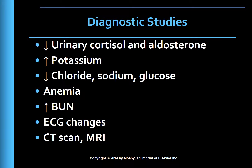Urine levels of free cortisol are low, as are urine levels of aldosterone. Other abnormal lab findings include hyperkalemia, hypochloremia, hyponatremia, hypoglycemia, anemia, and increased BUN levels. An ECG may show low voltage and peaked T waves caused by hyperkalemia. CT scans and MRI may be used to identify causes other than autoimmune, including tumors, fungal infections, tuberculosis, or adrenal calcification.